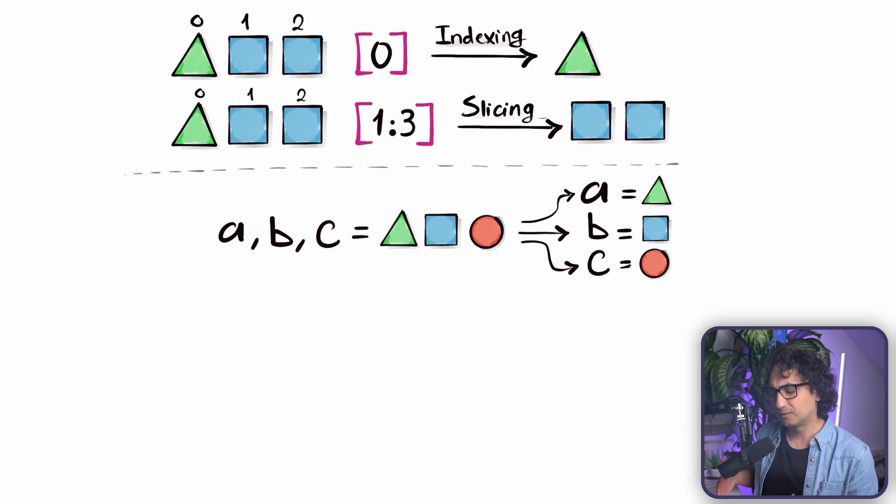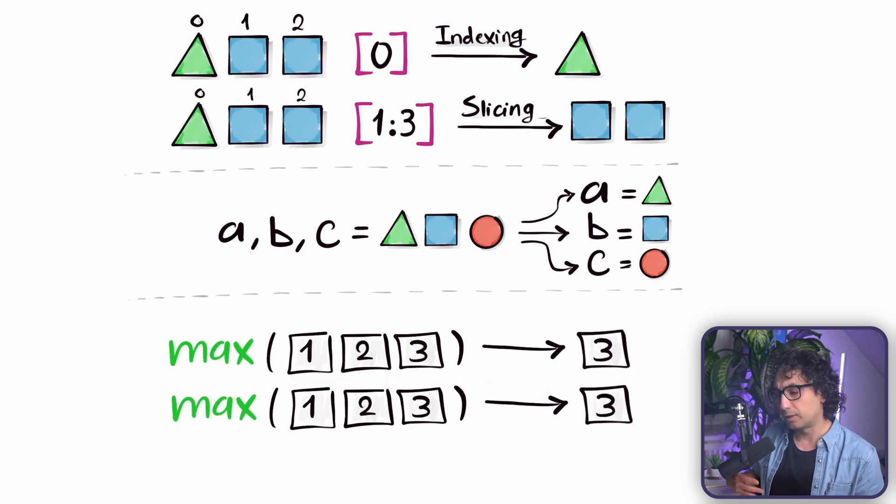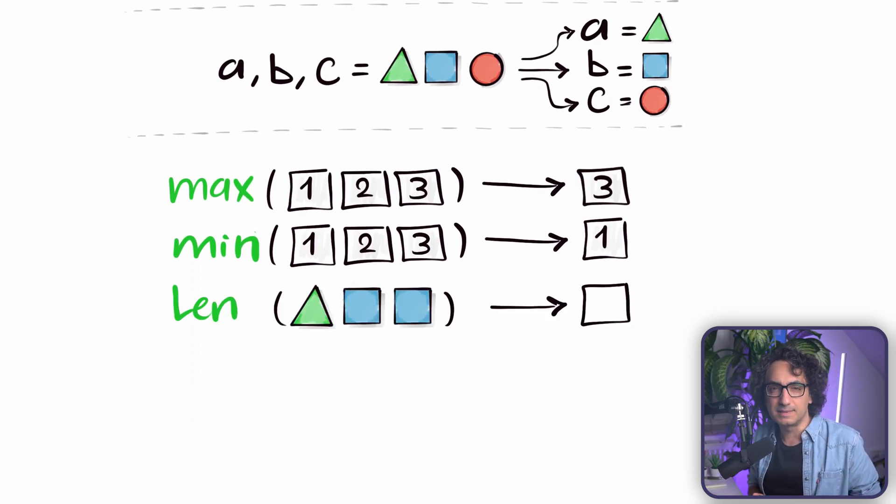In Python we have a lot of built-in functions that can help us to explore and analyze the data. For example, if you want to find the highest value in a list, then you can use max, or you can do the opposite where you are searching for the lowest value using the function min. Another one, if you want to find out how many items do we have inside the list, and for that we use the function length.